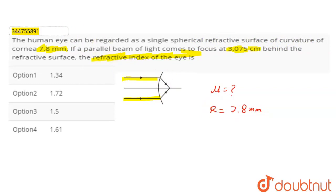What will be the focus? The focus is at 3.075 cm. That will be the v value, 3.075 cm behind the refractive surface.